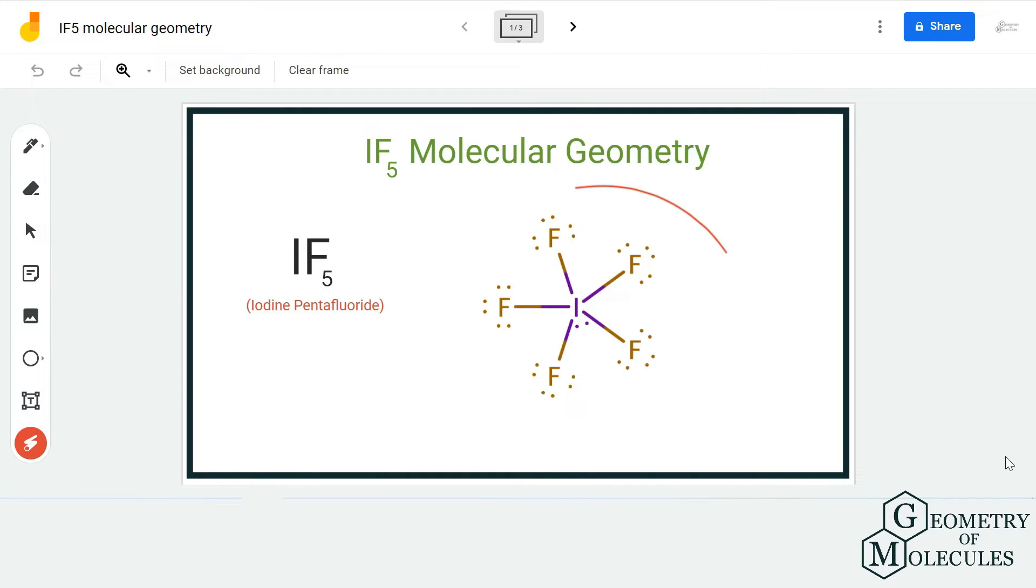going to look at its Lewis structure. This is the Lewis structure of IF5 molecule, in which the iodine atom is forming bonds with five fluorine atoms. Apart from that, there is also a lone pair of electrons present on the central atom.